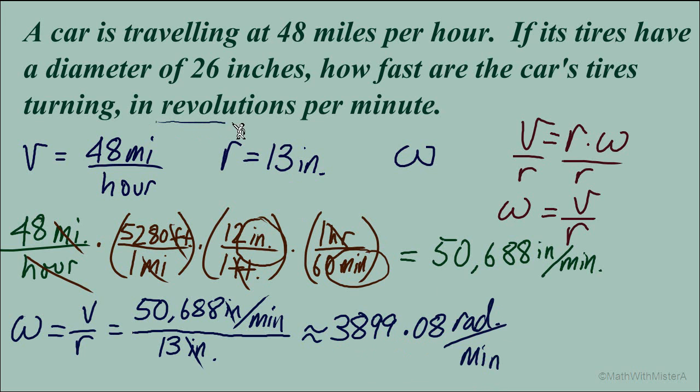but we want our answer to be in revolutions per minute. So we need to do one more conversion knowing that there are two pi radians in one revolution. That gives us the result of 620.56 revolutions per minute.